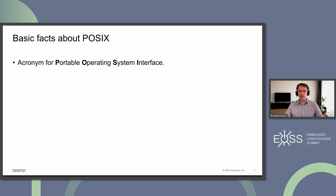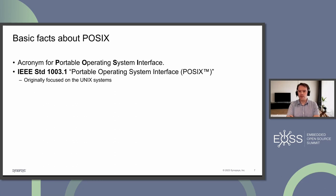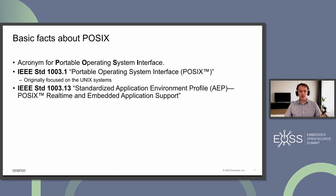POSIX was an attempt to standardize the interface between different versions of Unix. Although it originally referred to the IEEE standard 1003.1, the name POSIX more correctly refers to a family of related standards — you may have IEEE 1003.n where n might be one, two, three, four, and quite a lot of those. Much later, POSIX.13, that's exactly the 1003.13 standard, was developed as a subset of POSIX.1 which is supposed to be much more applicable to embedded systems.